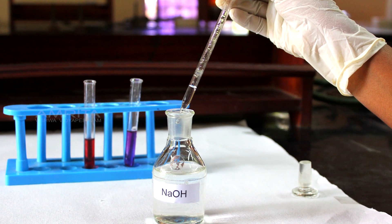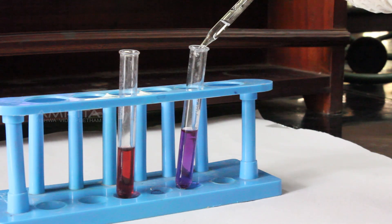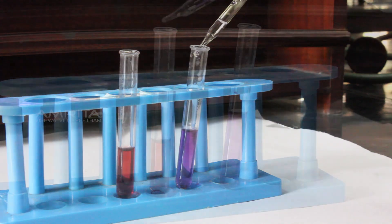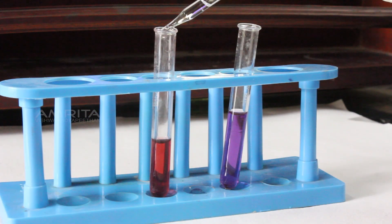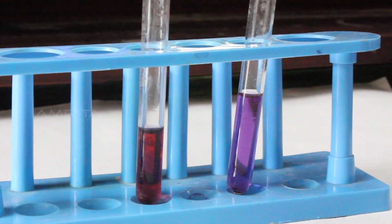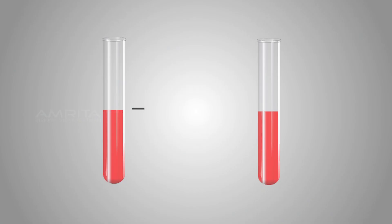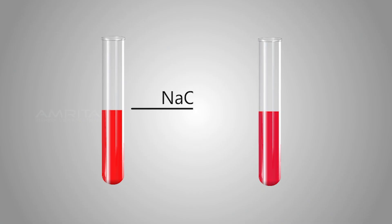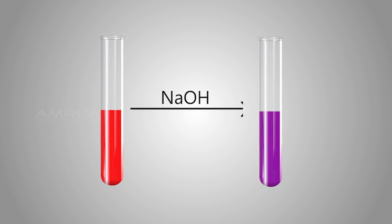Similarly, add a few drops of NaOH to red litmus solution and blue litmus solution, which are taken separately in two other test tubes. You can see that red litmus solution changes to blue, which indicates that NaOH is an alkali, having pH more than 7.